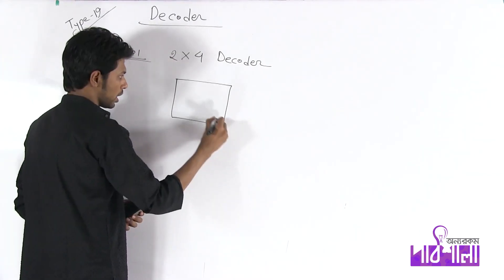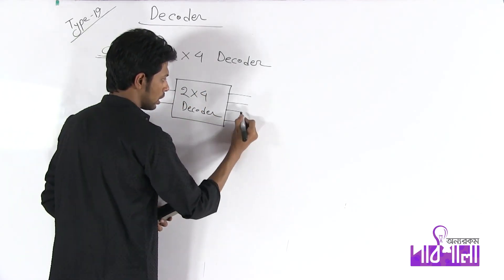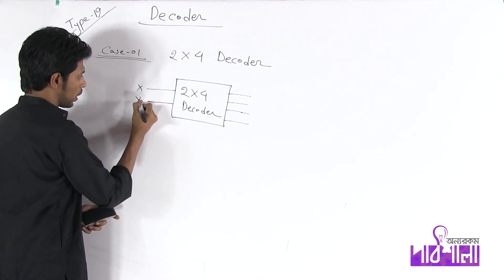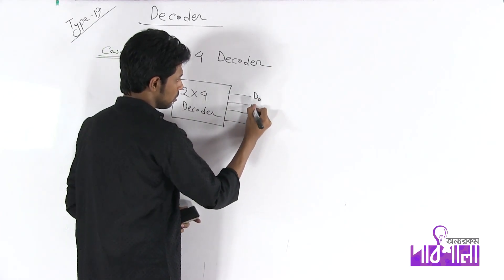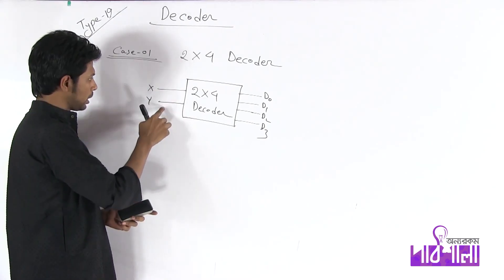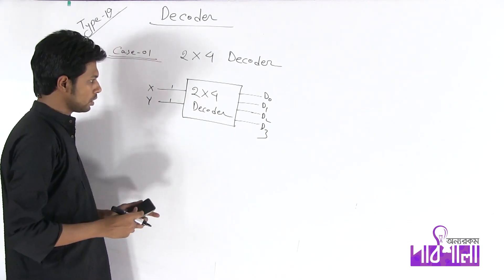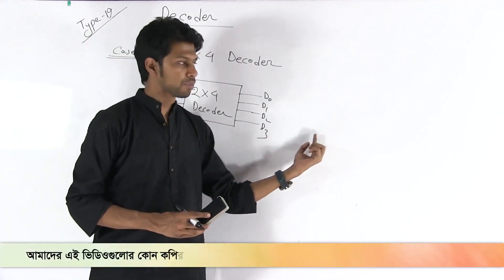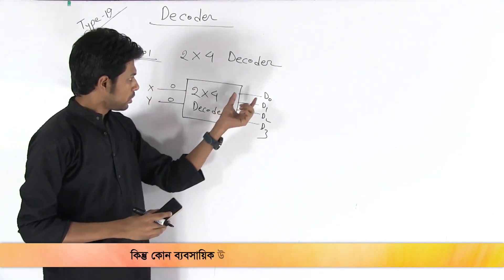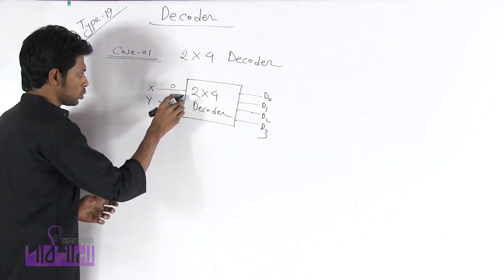So the 2-into-4 decoder has input 2 and output 4, with input X and Y and output 4. For the x=1, y=1 input, we get the D3 line with output 1. Then when x=1, y=0, we get D2. Then x=0, y=0 goes to the D0 line with output 1. Finally, the truth table will be done.